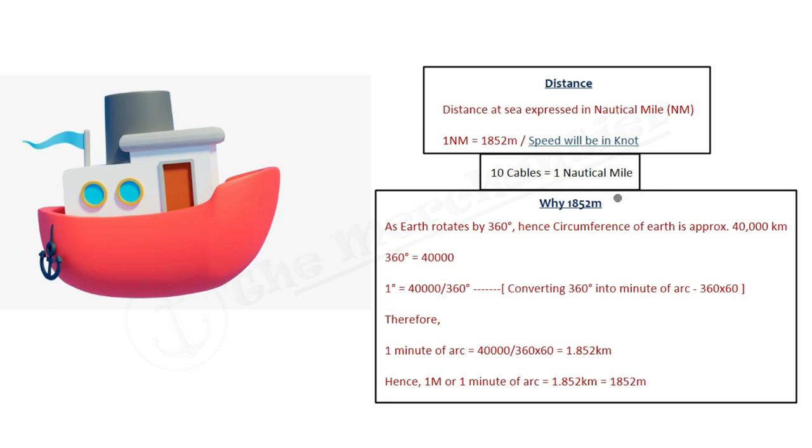This is just a measurement: 10 cables equals one nautical mile. The most important thing is why 1852 meters? Because when the Earth rotates, it rotates 360 degrees, and the Earth's circumference is approximately 40,000 kilometers.